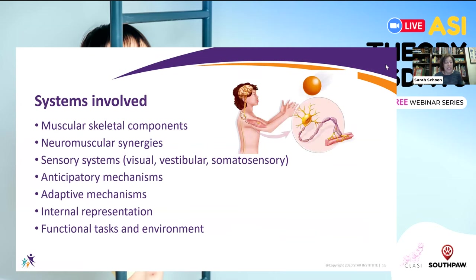There are a multitude of systems that underlie postural control and motor functioning that need to be explored, such as the musculoskeletal components, the acquisition of neuromuscular synergies, the primary sensory domains involved in balance, the activation of anticipatory mechanisms, adaptive mechanisms used to respond to the ever-changing internal and external environment, as well as our internal representation of the outside world in relationship to our internal self, and the impact that context and task have on performance.